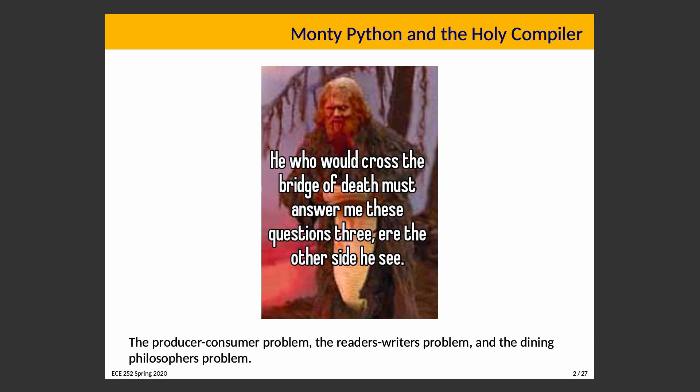All of the solutions to these problems make use of semaphores as a basis for mutual exclusion, and there are three problems we're going to look at in the most depth: the Producer-Consumer Problem, the Reader-Writer Problem, and the Dining Philosopher's Problem. The Dining Philosopher's Problem leads us into the topic of deadlock. We had an informal definition of that previously, and we will eventually need a formal definition, but for now we'll stick with the informal one.